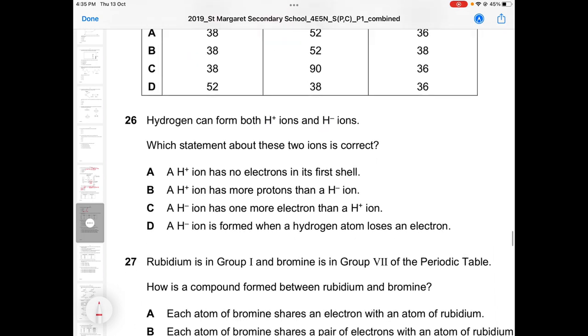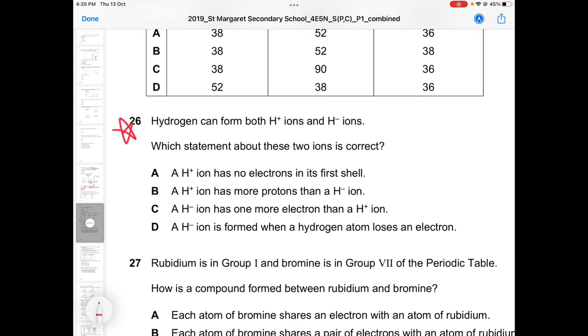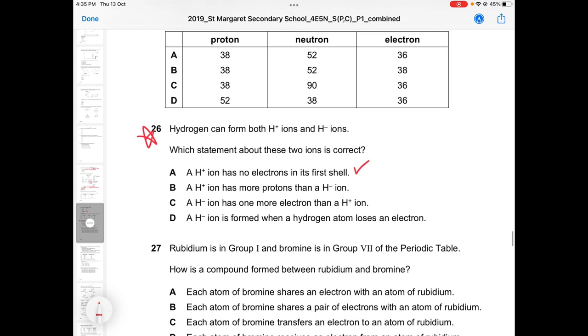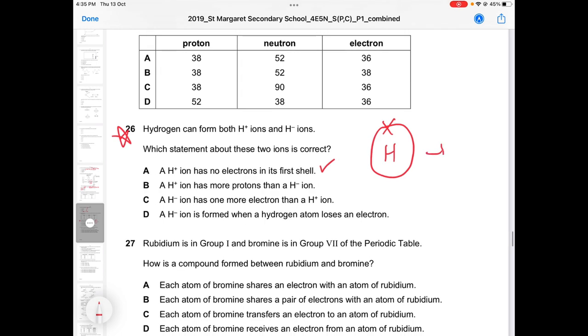The next question, question 6, put a star. Answer is A, hydrogen. When you form H+, you lose the electron. You don't have any more electrons.